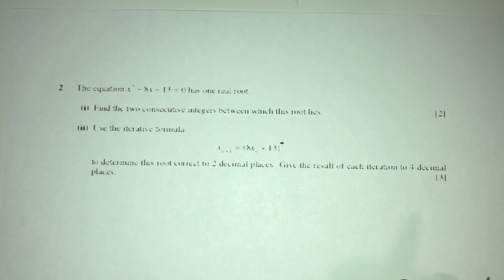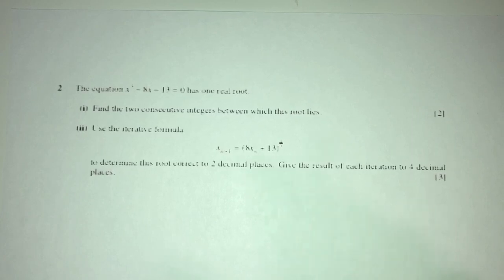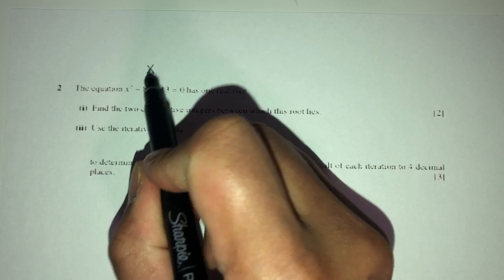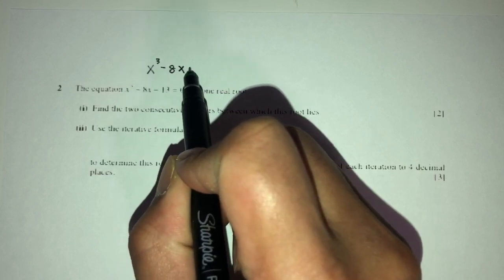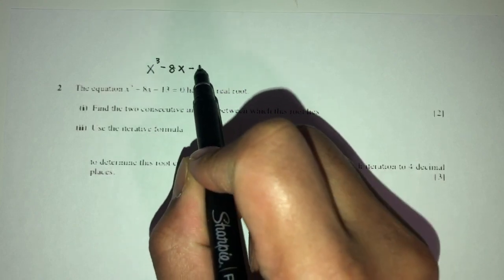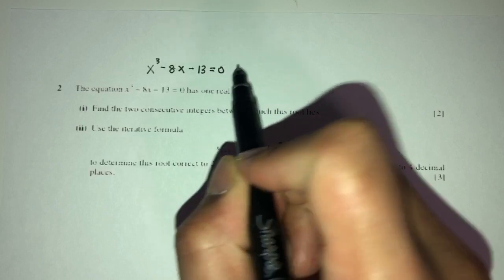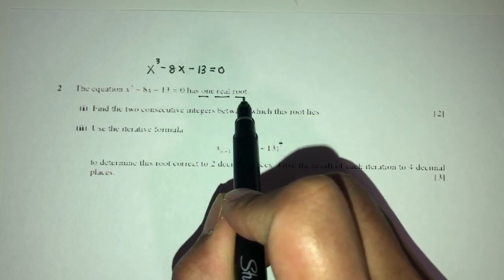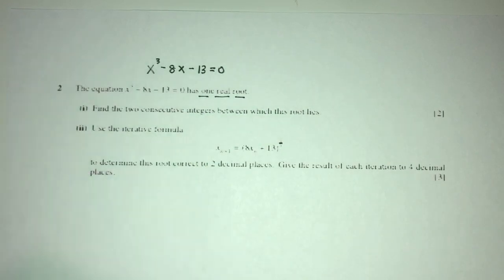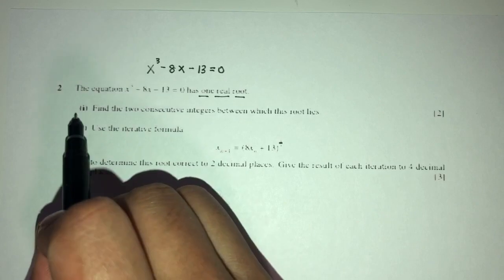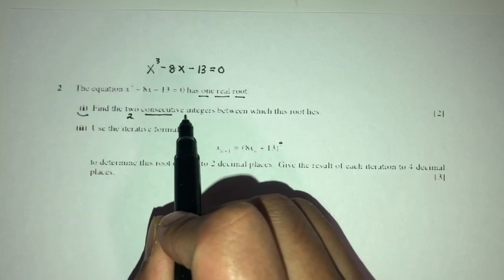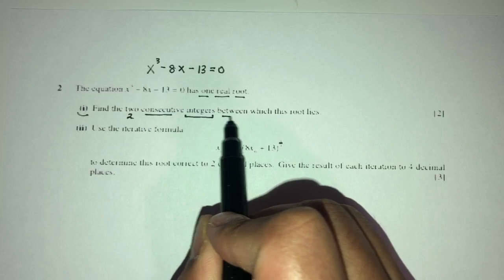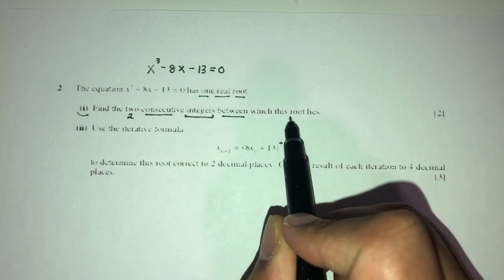Let's move on to question number 2. Here we have the equation x cubed minus 8x minus 13 equals 0, which has one real root. For part 1, find 2 consecutive integers between which this root lies.